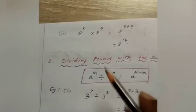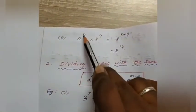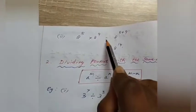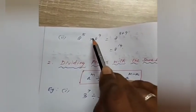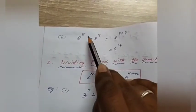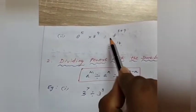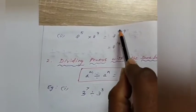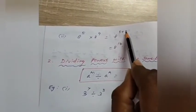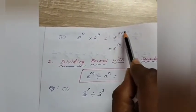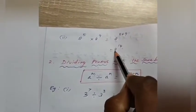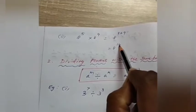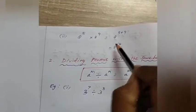The next example: 8 power 5 into 8 power 9. The bases are the same and it is multiplication, so we add the powers: 8 power 5 plus 9. Since 5 plus 9 equals 14, the answer is 8 power 14.